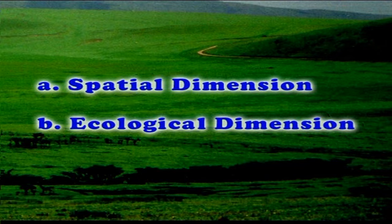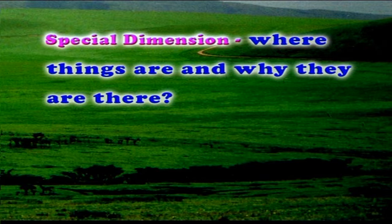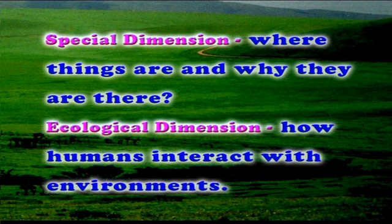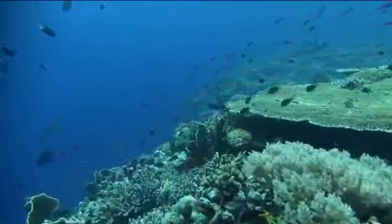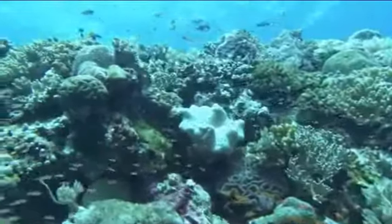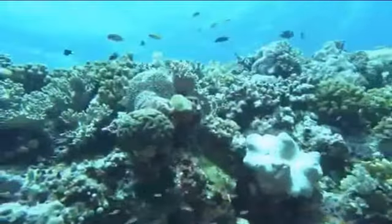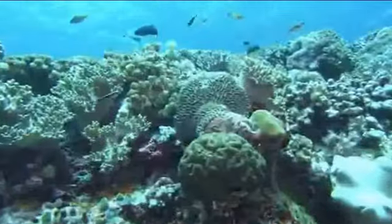Geography is a rich and complex discipline involving two key dimensions: the spatial dimension and the ecological dimension. The spatial dimension answers the questions of where things are and why they are there. The ecological dimension answers questions of how humans interact with the environment and focuses its attention towards the biological resources of the world.